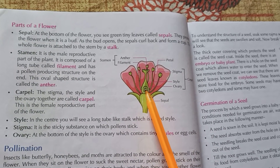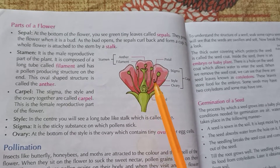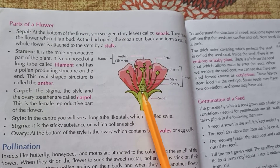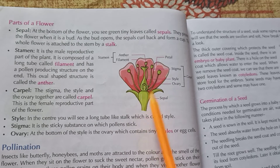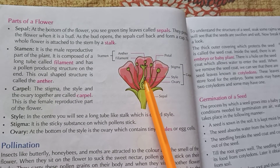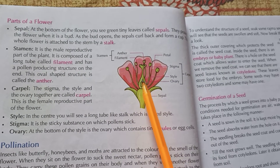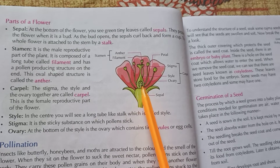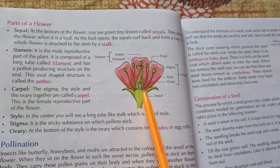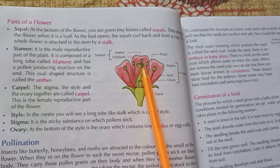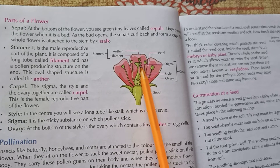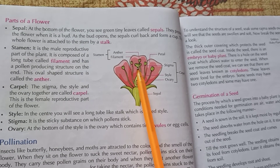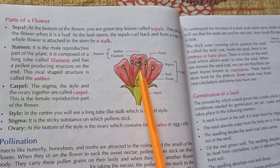This is the ovary. It contains egg cells. The style is a long tube, and at the back it becomes the ovary. In the ovary there are ovules. This is our stigma — the upper part — and pollen comes upon it.